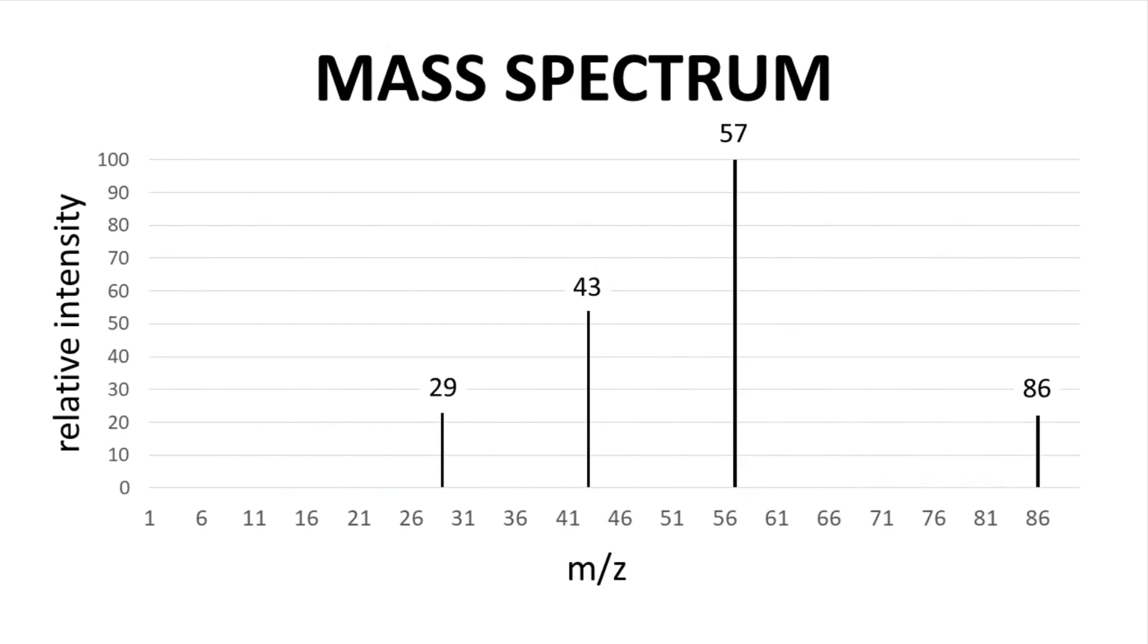So all mass spectra have an x-axis that relates mass to charge value of any peaks, m to z. For small molecules like the ones we normally see in organic chemistry, the charge z is almost always 1. So the m/z ratio equals m, the nominal mass of the peak.